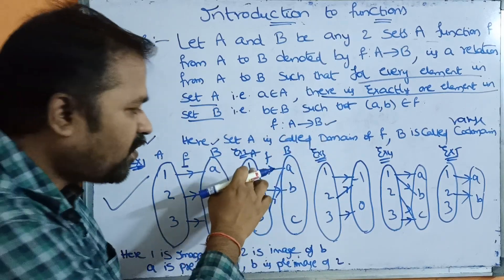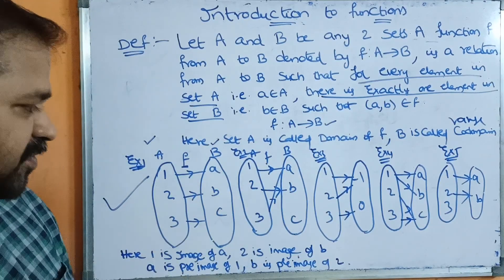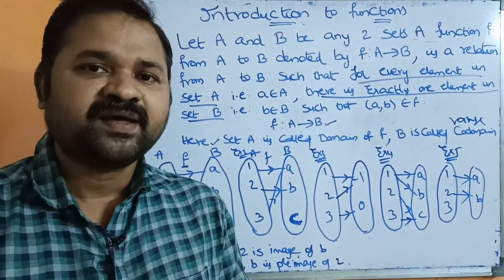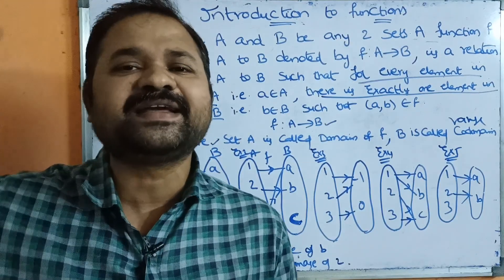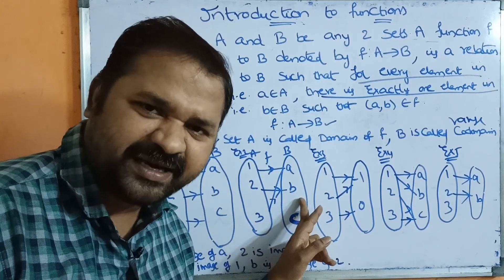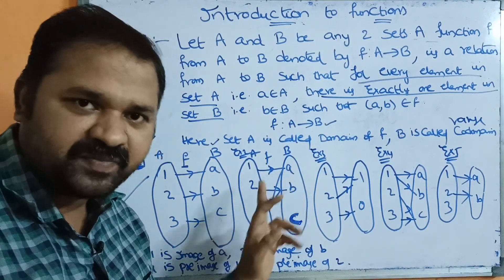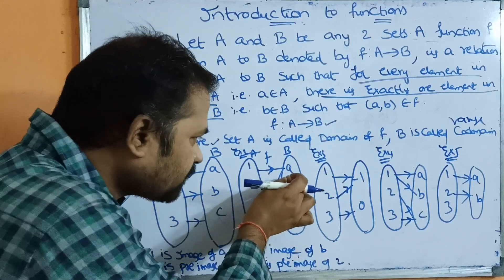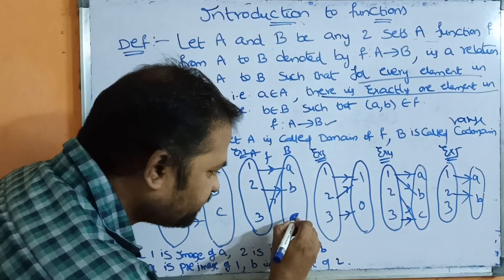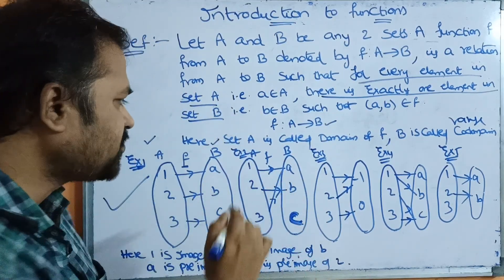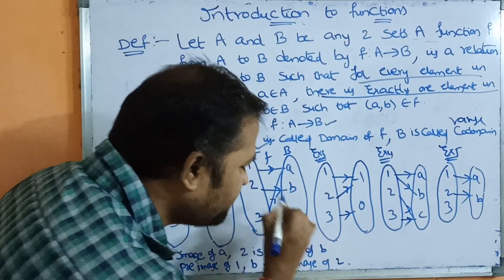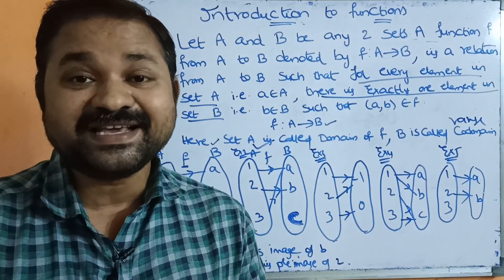In Example 2, 1 maps to A, 2 maps to B, and 3 maps to A. Note that C in set B has no mapping — that is fine. Also, A in set B is mapped to by two elements (1 and 3) — that is also fine. Since every element in set A maps to exactly one element in set B, this is still a function. If an element in set B is unmapped, there is no problem.